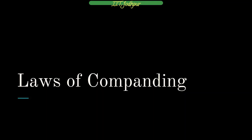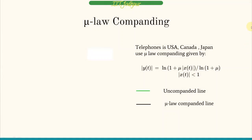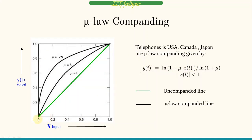There are two major companding laws. First is the mu-law, used in the USA, Canada, and Japan. The output is given by: y(t) = ln(1 + μ|x(t)|) / ln(1 + μ), where x(t) is the input and y(t) is the output, always on a normalized scale from 0 to 1. For the uncompanded case, output increases proportionally with input, but what we want is a significant change in output for small inputs, while the rate of change decreases as amplitude gets very high.